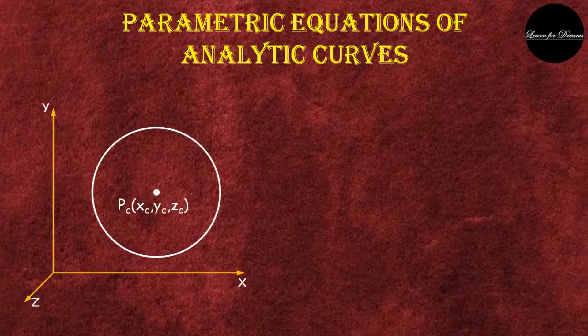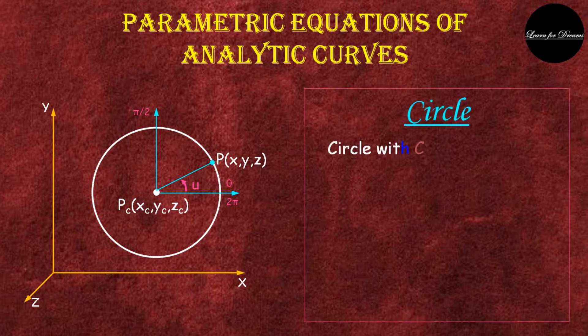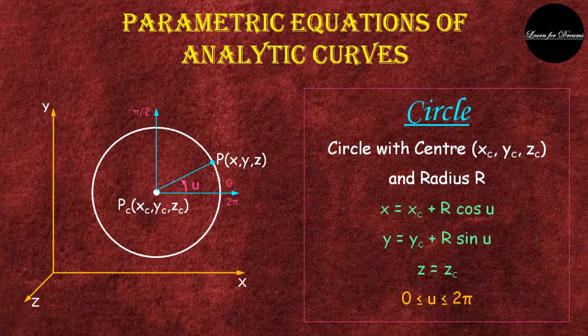This is a center of a circle pc with coordinates xc, yc, zc. There is a point p at an angle u. The radius of circle is r. The parametric equations are x is equal to xc plus r cos u.